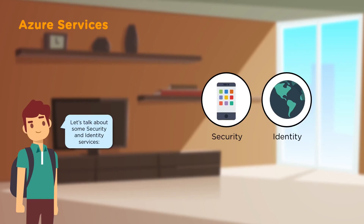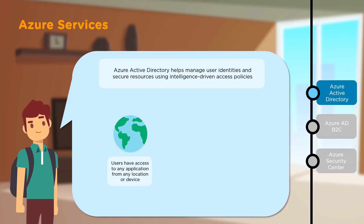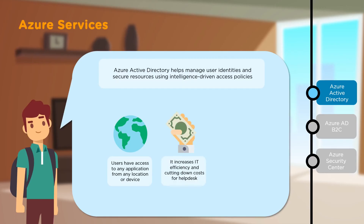Now let's look at some security and identity services. First, we have Azure Active Directory. With it, you can manage user identities and ensure resources are kept safe with the help of intelligence-driven access policies. One of the main features is that you can access your applications from any location or device. It helps increase efficiency, cuts costs on the help desk, improves security, and can respond to advanced threats in real time.